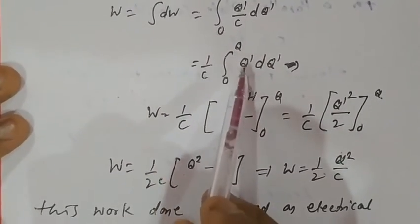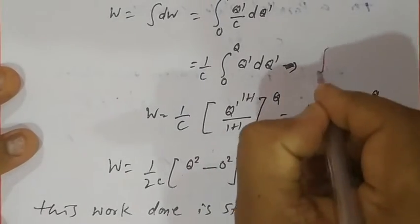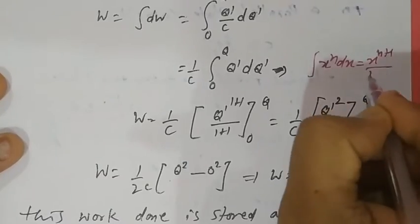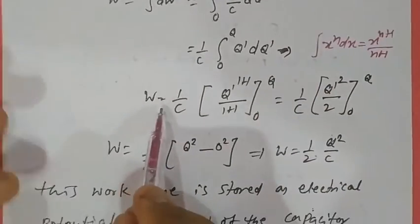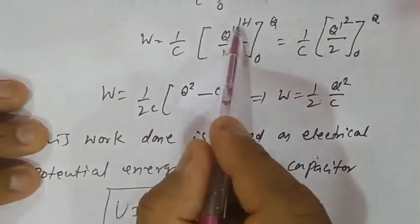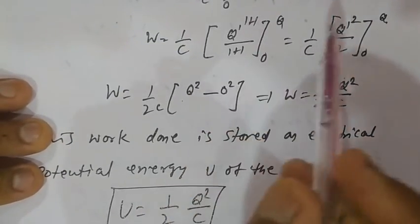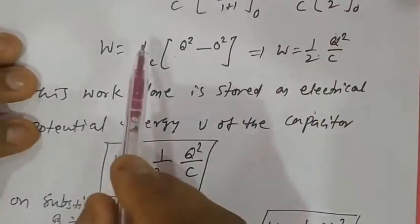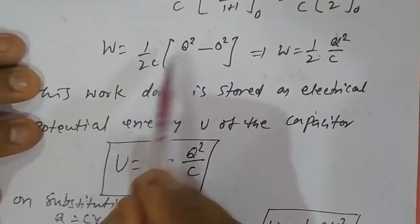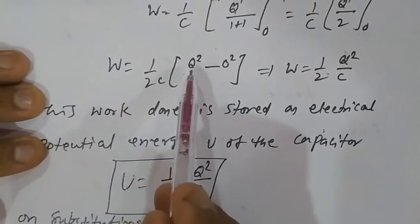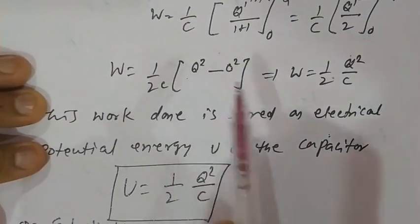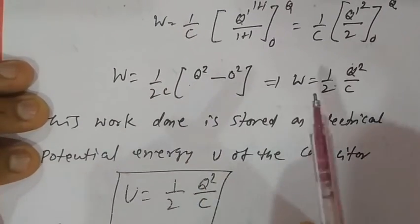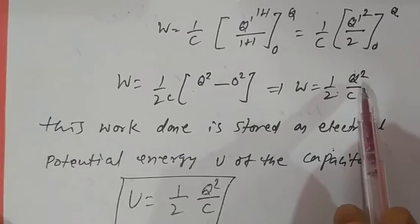Taking 1/C as common, we integrate from 0 to Q: Q' dQ'. Using the formula for x^n dx = x^(n+1)/(n+1), we get W = (1/C) × [Q'^2 / 2] from 0 to Q. So W = (1/2C)(Q² − 0²), giving W equal to Q² / 2C.